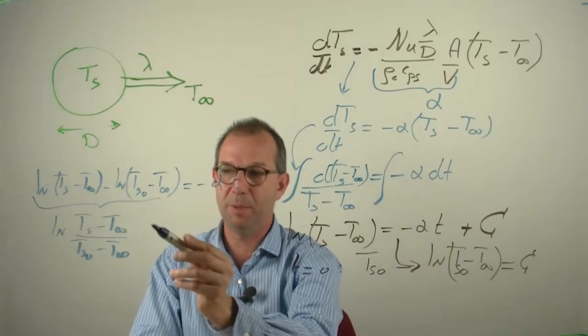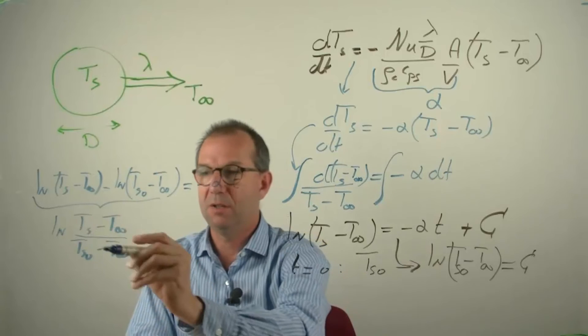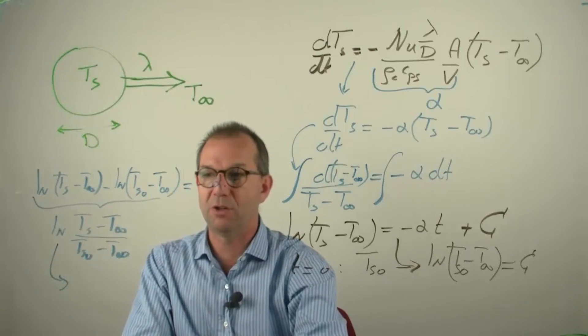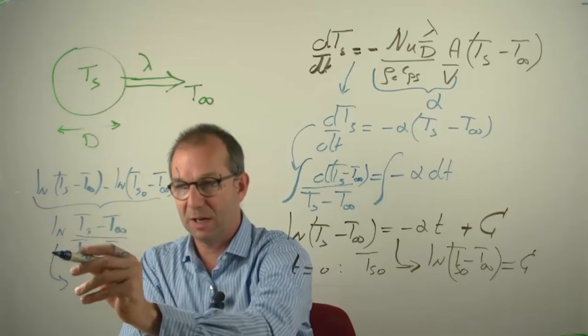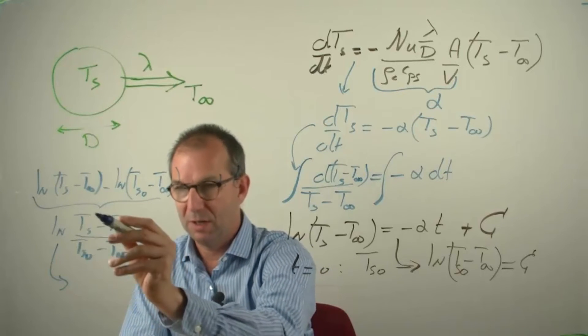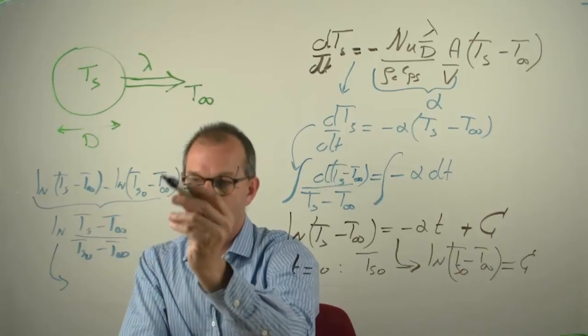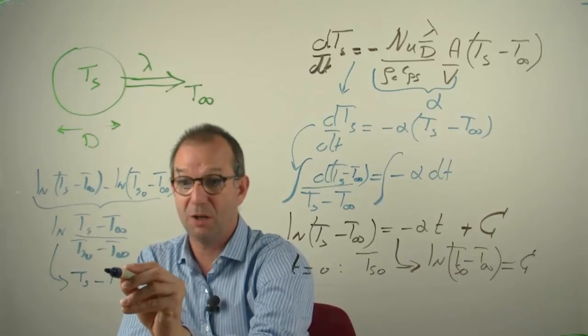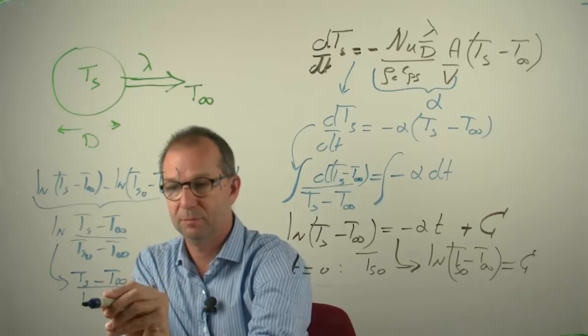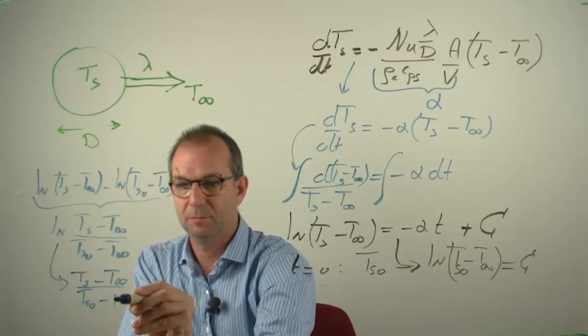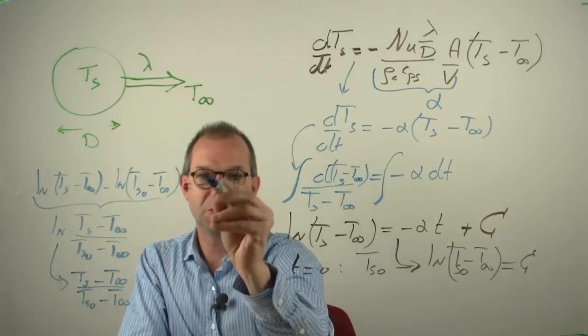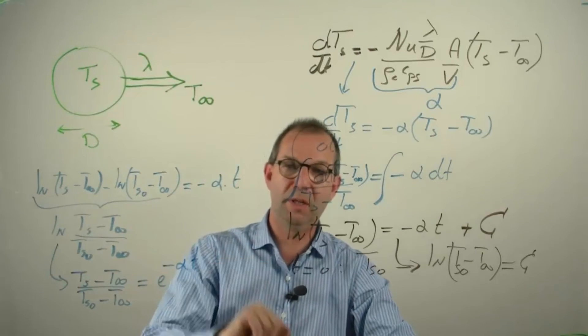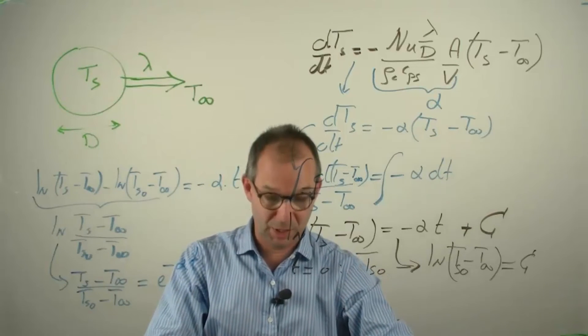Now rather than writing it implicit that you have to take the logarithm, you can also take the exponents, the exponential function on both sides. So if you take the exponential function of this, then the exponent of the logarithm is a very complicated way of writing just the argument. And on this side you get the exponent of minus alpha T. This is the cooling down of the sphere, purely by conduction.